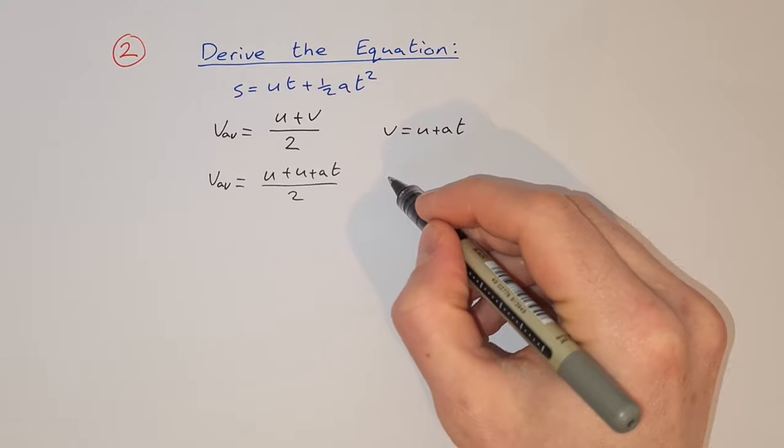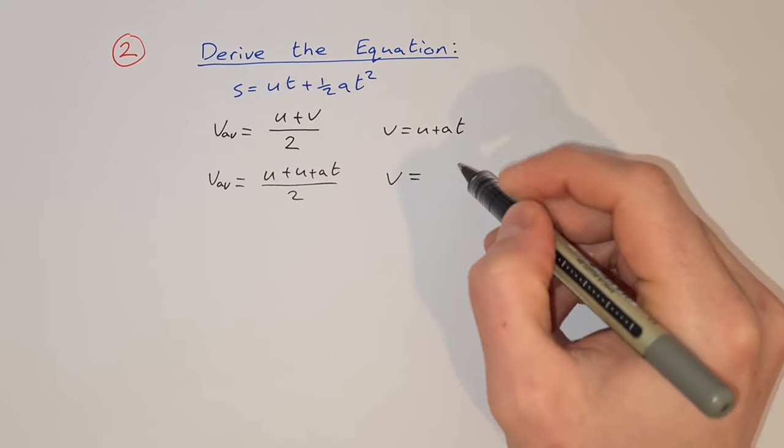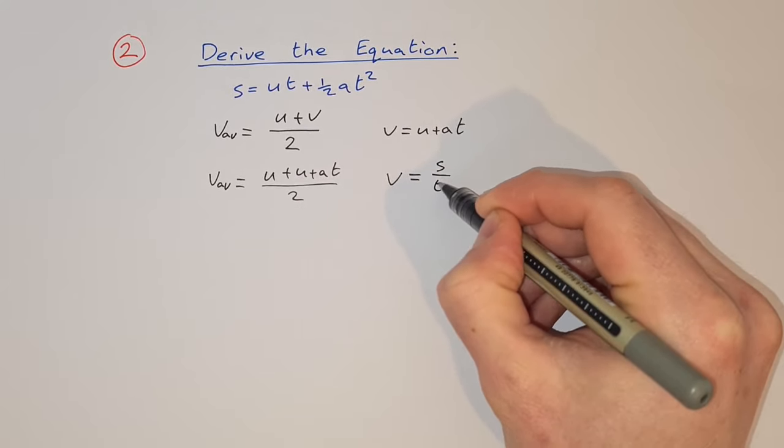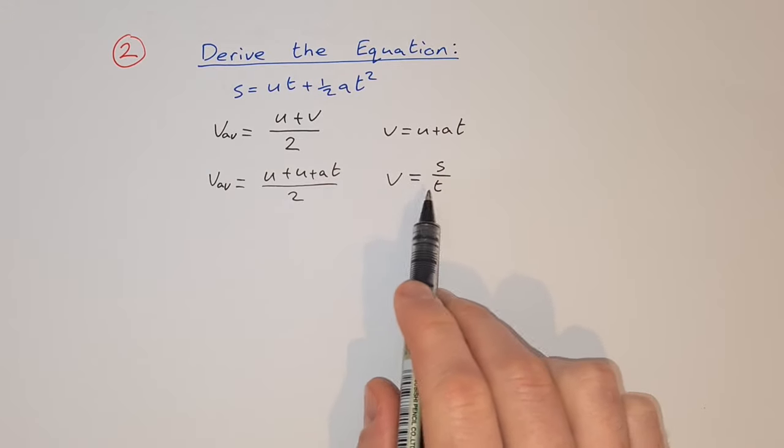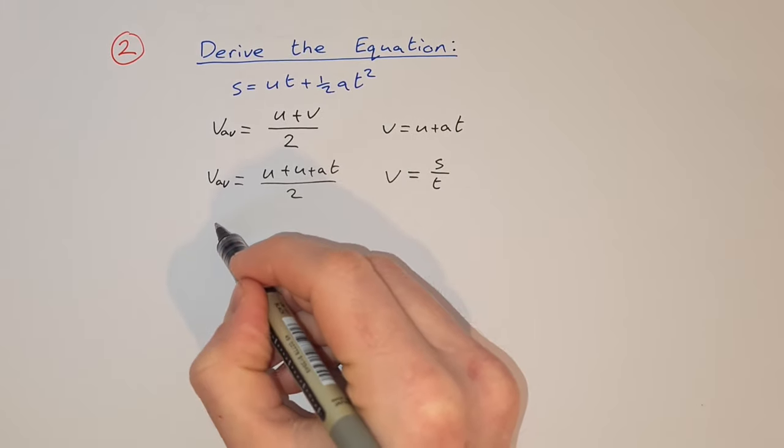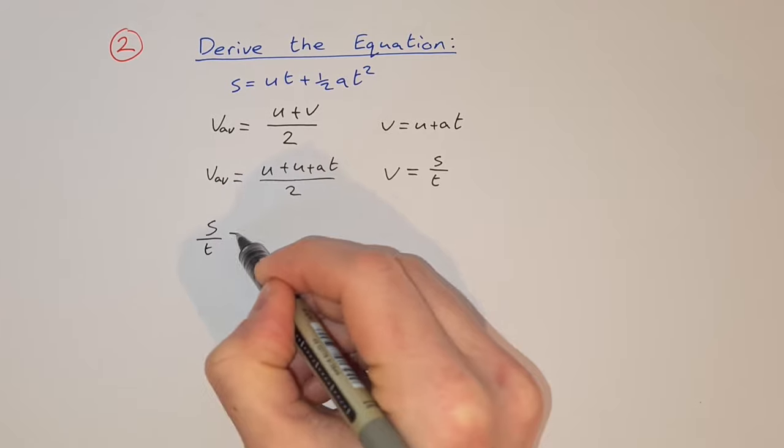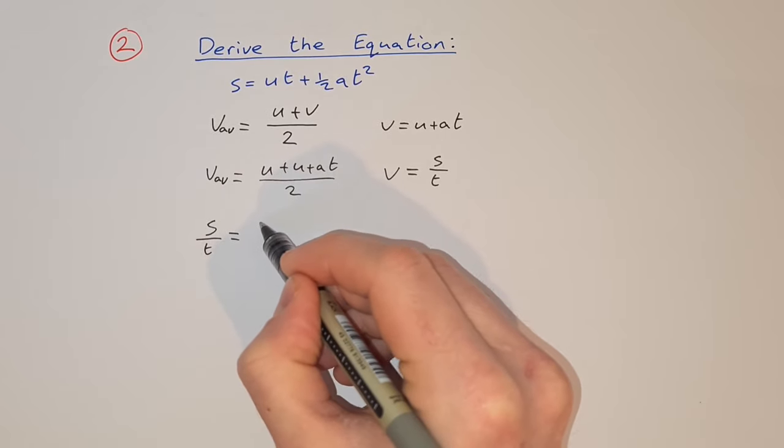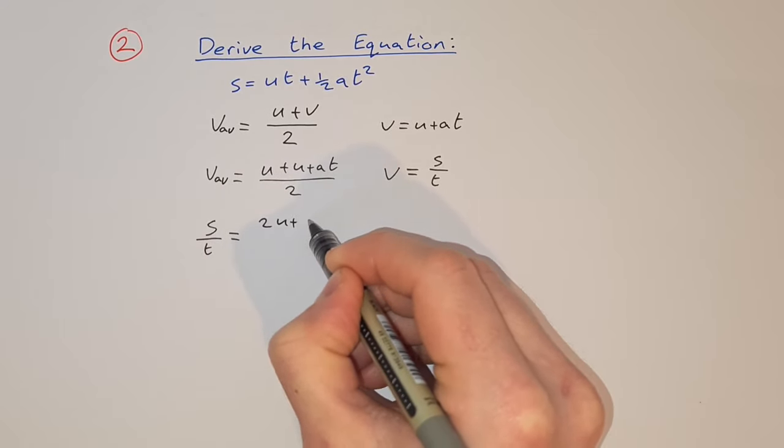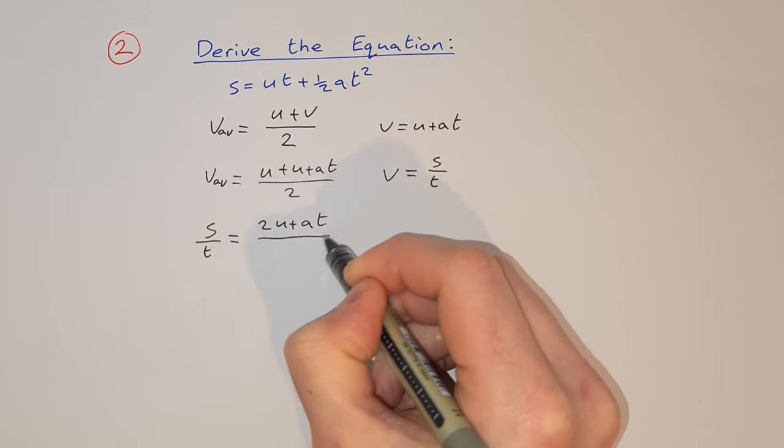Now we can also say that velocity equals displacement over time, so s over t. So we can substitute that in to say s over t equals 2u plus at over 2.